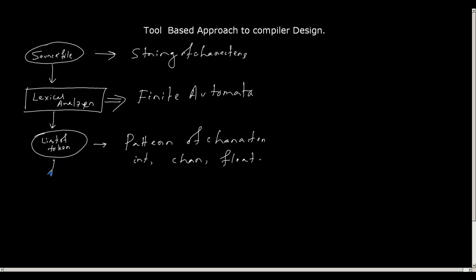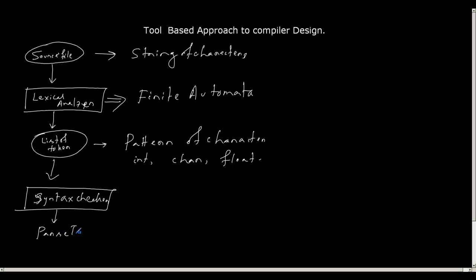Then comes what we call the syntax checker, also known as a parser. The parser will take the list of tokens and create what we call a parse tree. You may remember context-free grammar and pushdown automata — given a context-free grammar, we can always implement a pushdown automata. The program that implements a syntax checker should be built with a data structure called a pushdown automata, so you will have a stack of states.